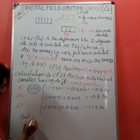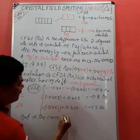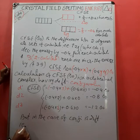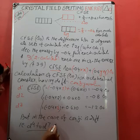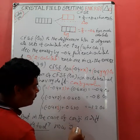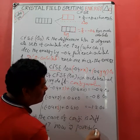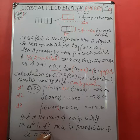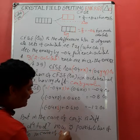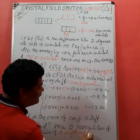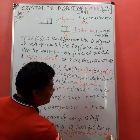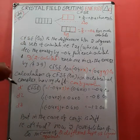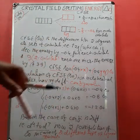However, for higher d-electron configurations, the value of delta-oh will differ depending on the type of ligand approaching. Specifically, we need to consider what happens with weak field ligands versus strong field ligands, as the electron filling pattern changes in those cases.